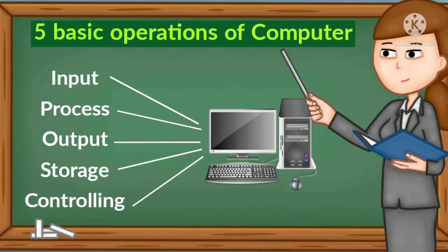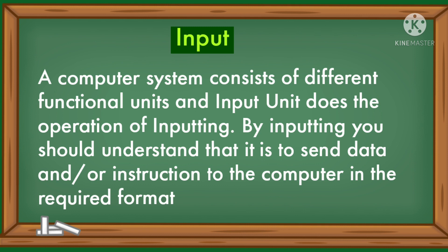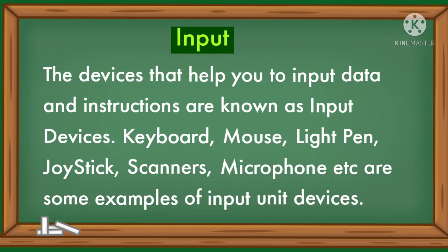Today we will learn about five basic operations of a computer. Inputting is a basic operation of a computer system — it is the act of feeding in data and instructions to the computer. A computer system consists of different functional units, and the input unit does the operation of inputting. It is to send data and/or instructions to the computer in the required format. Devices that help you to input data and instructions are known as input devices — keyboard, mouse, light pen, joystick, scanners, microphone, etc.